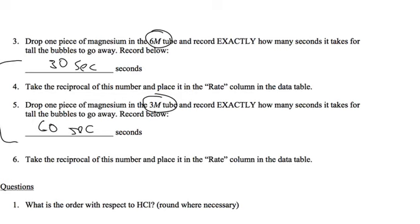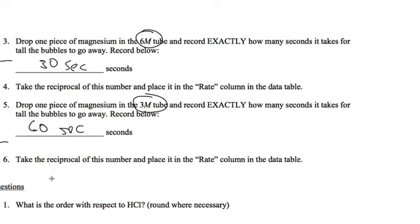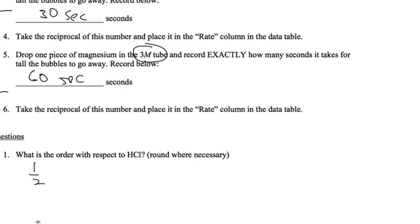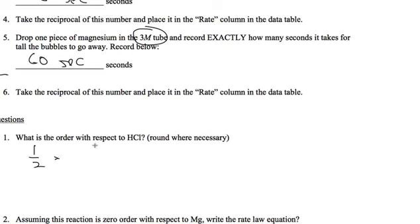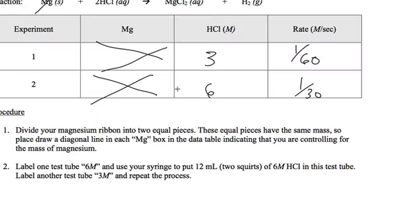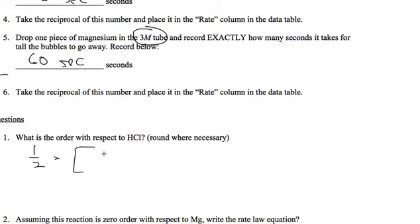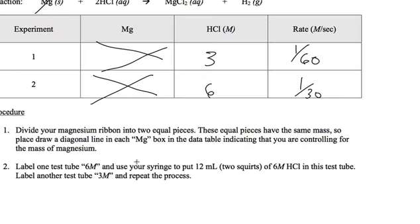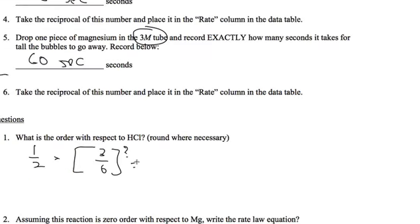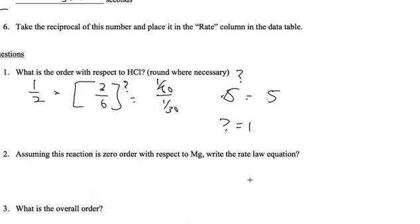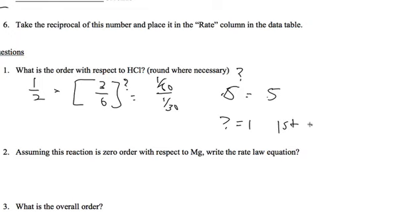What is the order with respect to HCl? So we're going to do experiment one and experiment two. And the rate goes from three to six or the concentration. And when the concentration is doubled, the rate goes from 1/60 to 1/30. So I'm just going to put 1/60, 1/30. I do that up and I get 0.5 question mark equals 0.5. So question mark equals one. So the rate order is one. Call it first order.